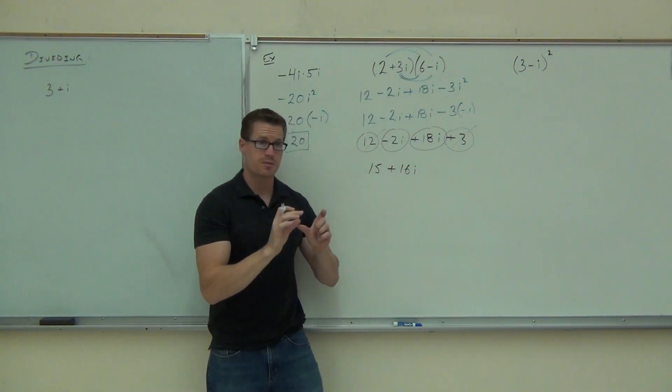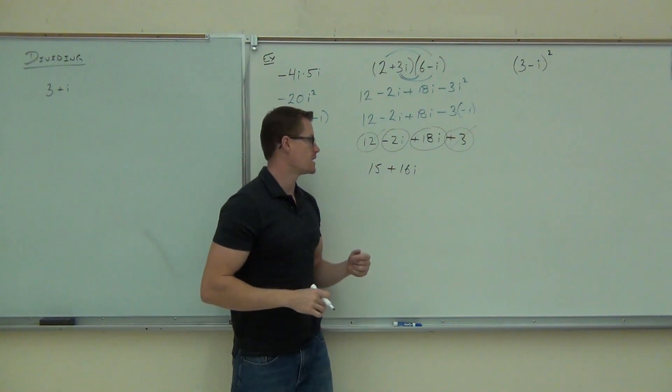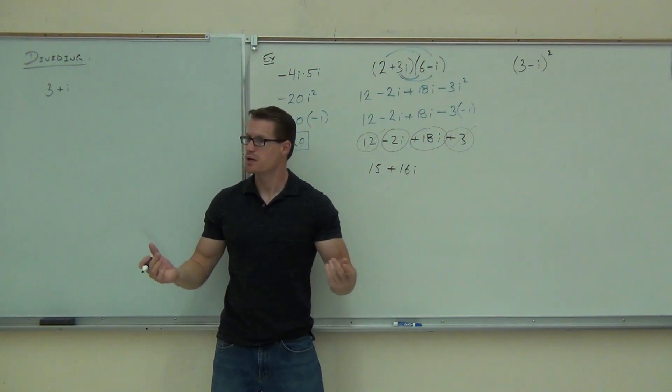That gives us 15 plus 16i. Again, we don't make an i squared when we're combining like parts there. Only when you're multiplying i times i. That's as far as we can go. You're done. That's it.